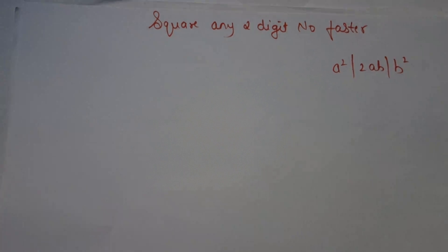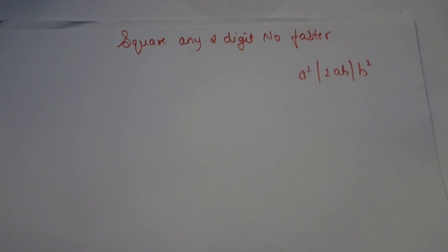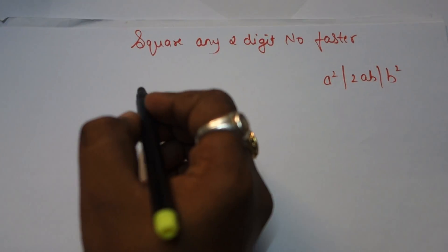Good morning everyone. I'm back with some tricks. Today we will see how to find the square of any two-digit number. Let's begin with the first example: 22 square.